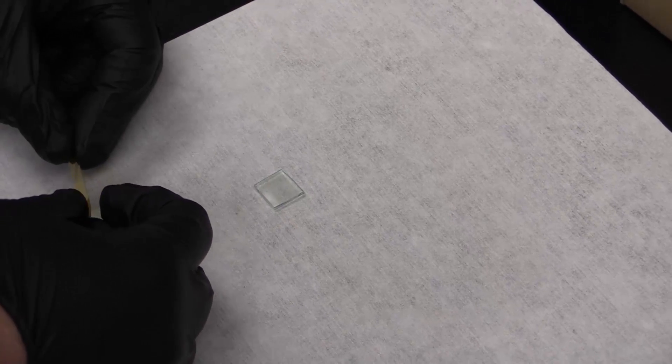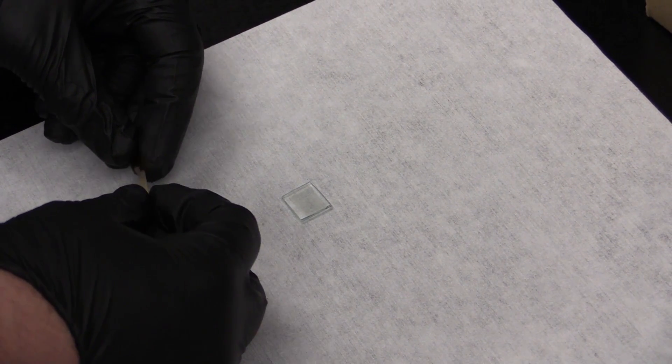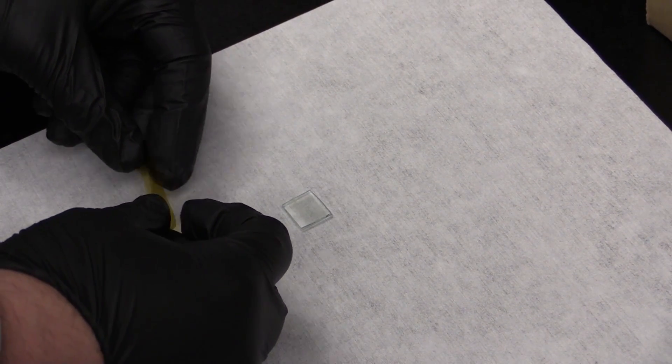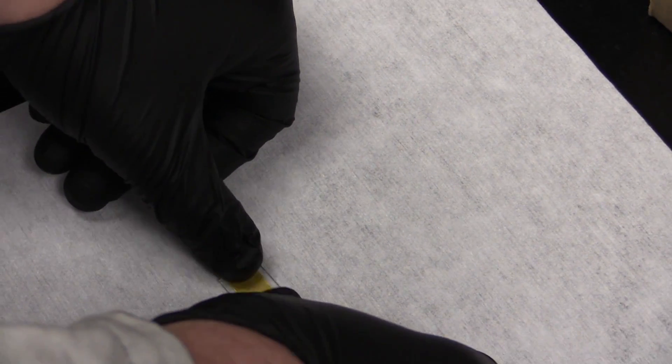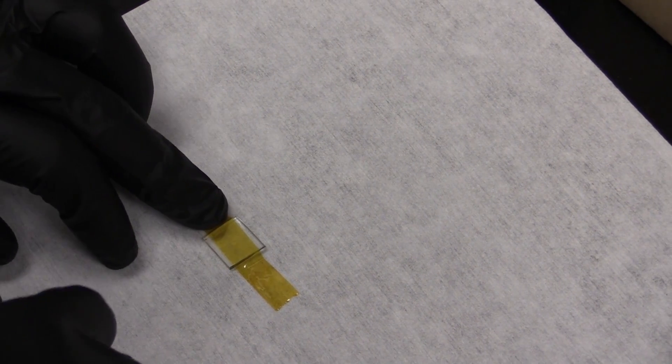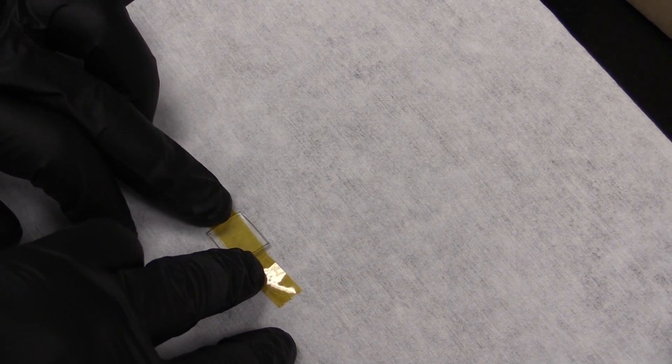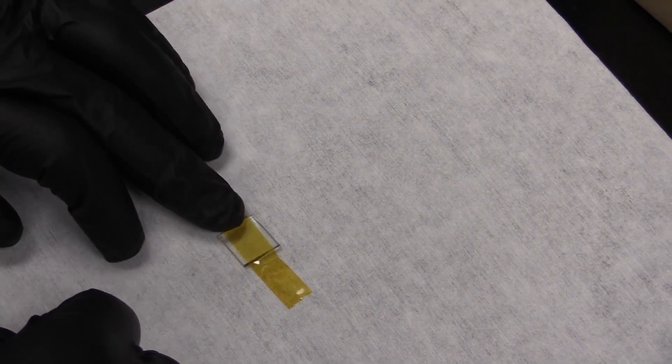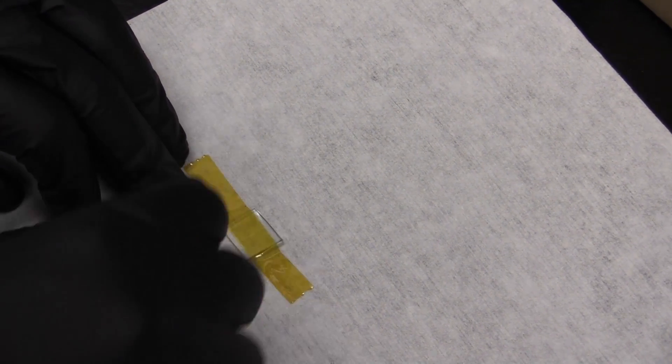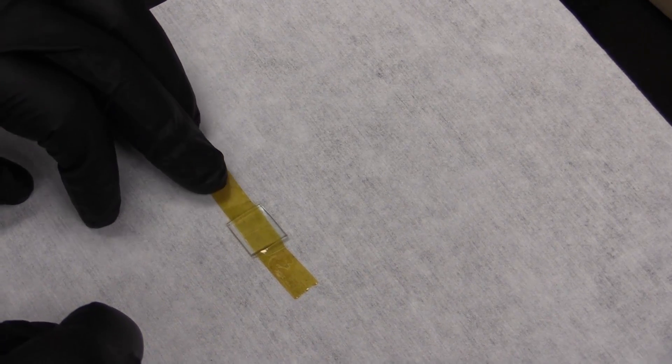First, we're going to take a piece of FTO glass and etch off FTO around the edges of the substrate using zinc powder and 4-molar hydrochloric acid. We do this to prevent short-circuiting between the top and bottom contacts in the device during testing, since our test leads press down at the edges of the solar cell. We start by covering the conductive side of the FTO glass with polyamide tape that leaves the edges of the substrate exposed. Next, we cover the substrate fully with zinc powder.